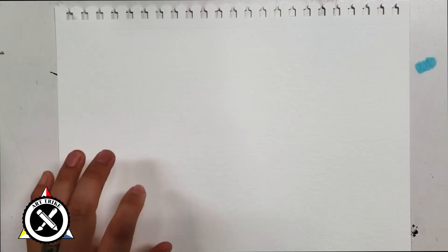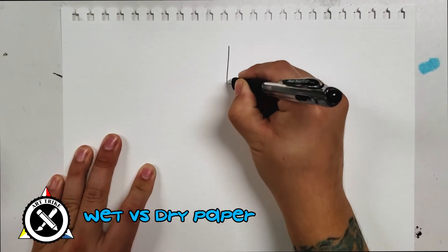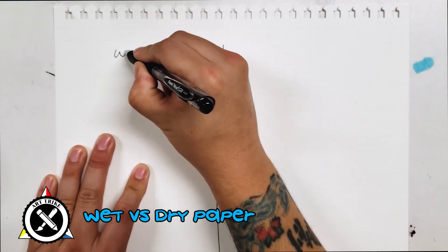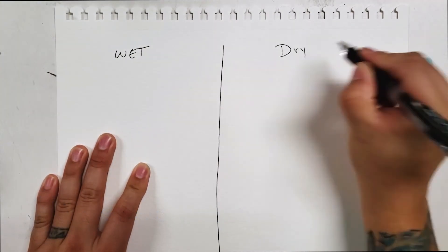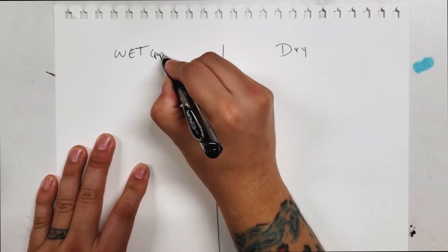Alright, let's take this watercolor paper and do one more experiment. What happens when we add these pigments to wet paper versus dry paper? What do we get? What's the difference?